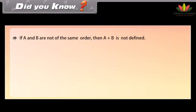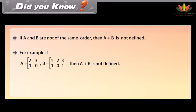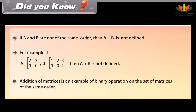Did you know? If A and B are not of the same order, then A + B is not defined. For example, if A is a 2 by 2 matrix [2, 3; 1, 0] and B is a 2 by 3 matrix [1, 2, 3; 1, 0, 1], then A + B is not defined. Addition of matrices is an example of a binary operation on the set of matrices of the same order.